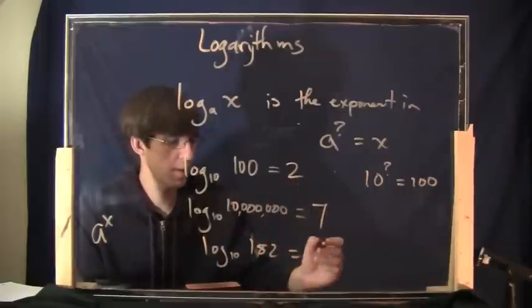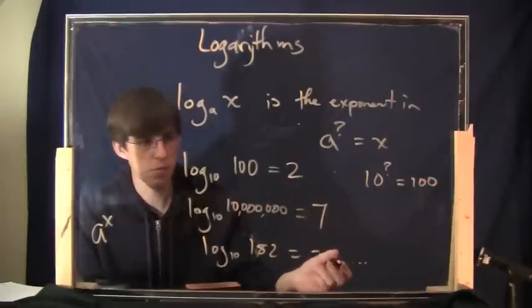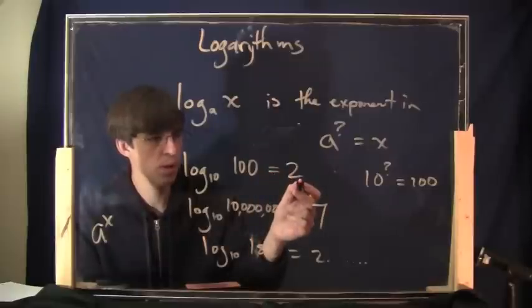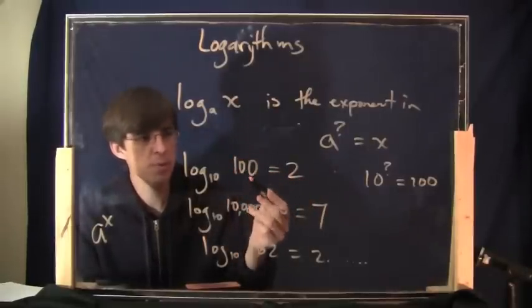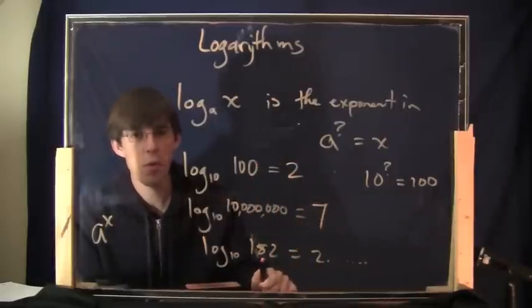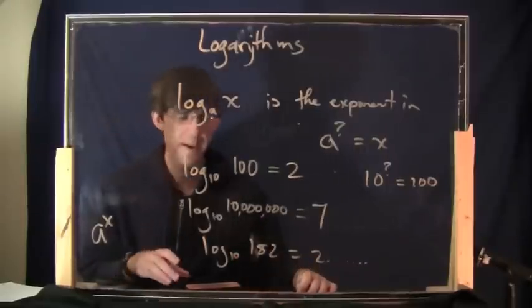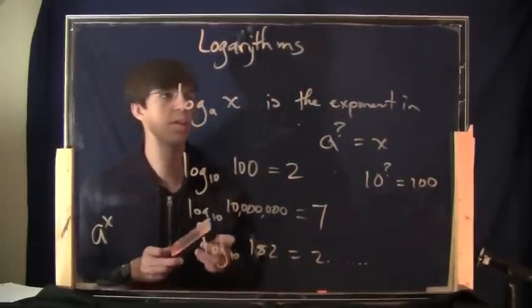The answer is something like 2 point, it's a little bit more than 2, right? Because this one is 2. In order to get to 3, you have to go all the way up to 1,000, right? So in between 100 and 1,000, there'll be 2 point whatever. This is on the low end of that range. So this is slightly greater than 2. So log base 10, you can kind of estimate in your head.